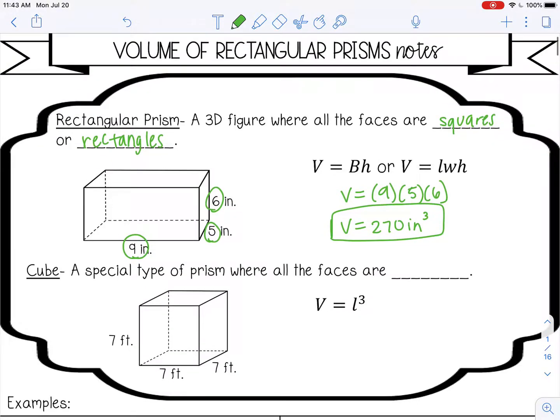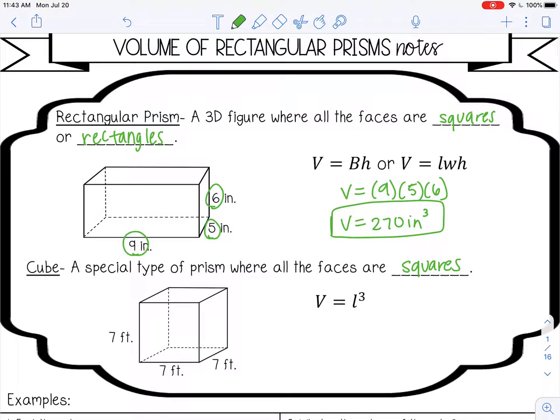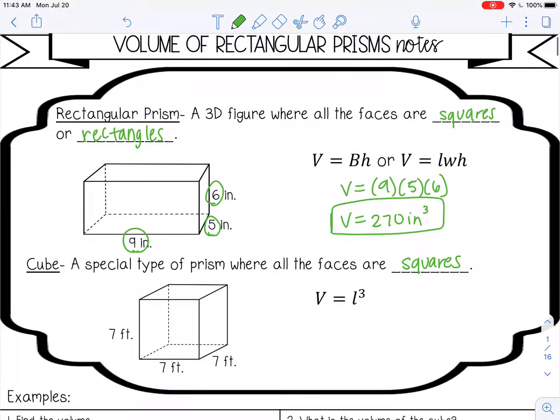The next shape is a cube, and it's a special type of rectangular prism where all the faces are squares. And you can still use the same formula, but sometimes you may see a special formula volume equals length cubed, because instead of having three different dimensions for a cube, all the numbers are going to be the same.